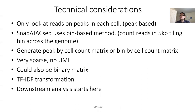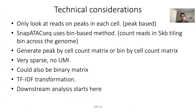There are some technical considerations for single-cell ATAC-seq analysis. One can either look at reads in peaks for each cell — this is the peak-based approach. The other tool, SnapATAC, uses a bin-based method: it tiles the genome into bins, like 5kb bins, and counts reads in each 5kb bin. We have around 3 billion bases, so dividing by 5kb gives around 0.6 million bins — that's a lot, and the calculation may be more computationally intensive.